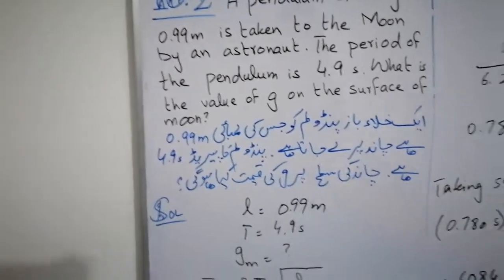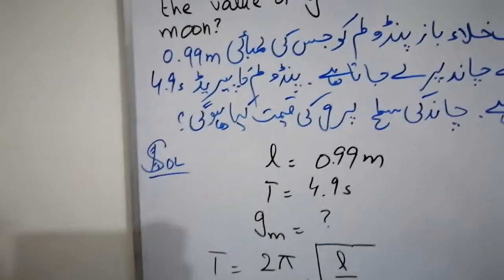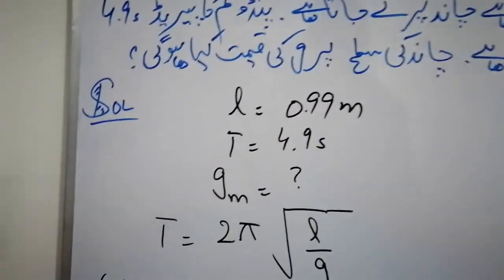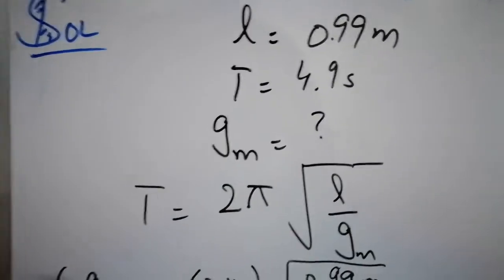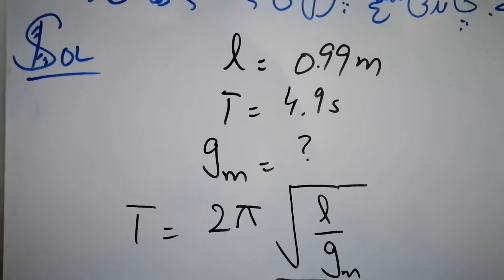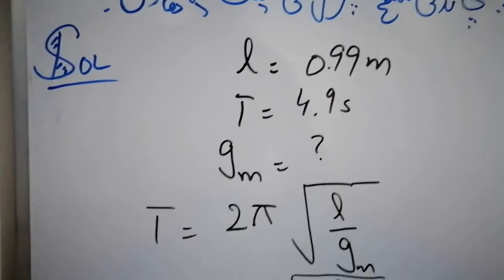We know that the formula of time period is T equals 2 pi square root of L by g. Here we write not only g, we write it here as g_m. g_m represents gravity of the moon because we have to find gravity of the moon.